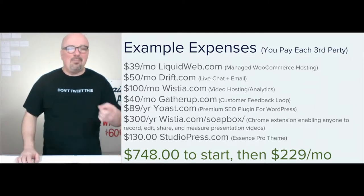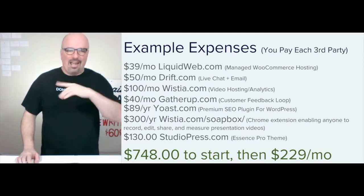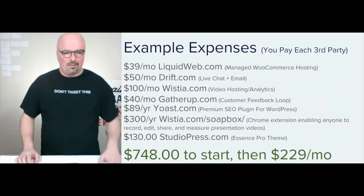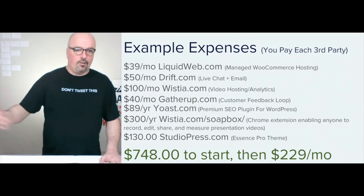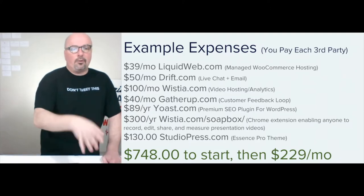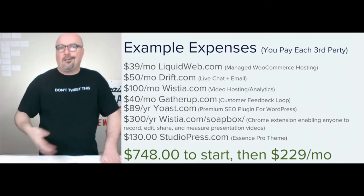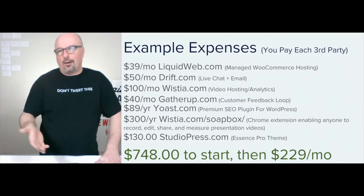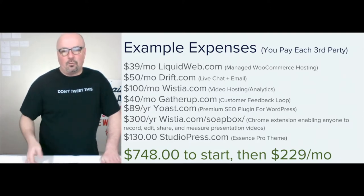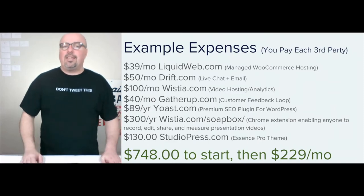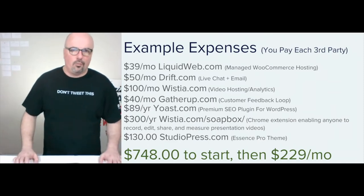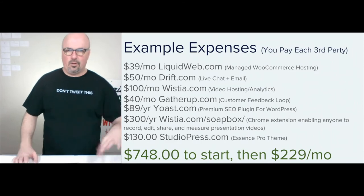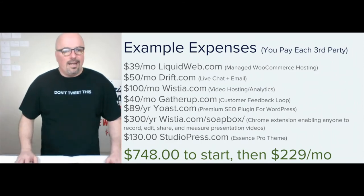It might be a little more — you'll have to go check. I haven't checked the price in a while because I bought it a long time ago. I'm about to have to re-up though, because the next year is coming up. $130 for StudioPress.com — that's for the Essence Pro theme. You could use any of their WooCommerce-enabled themes from StudioPress and rock on.